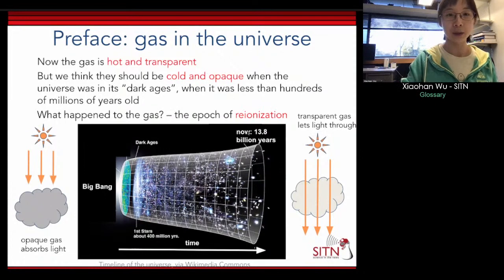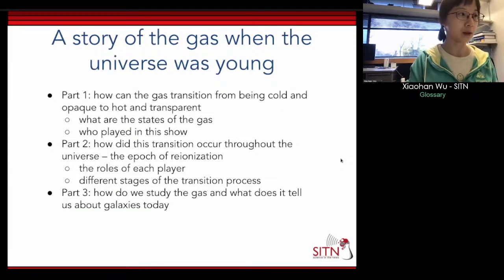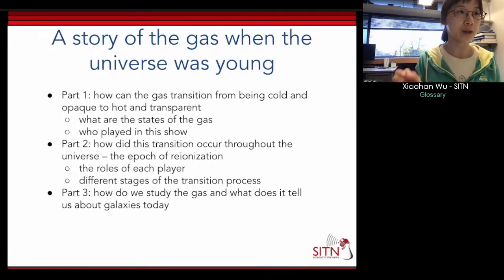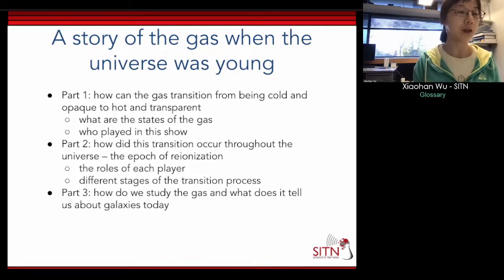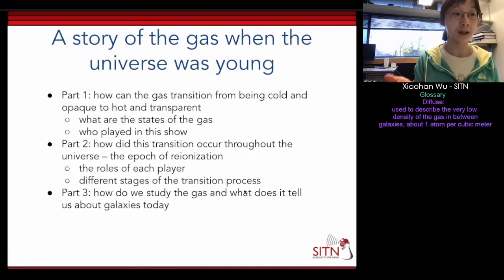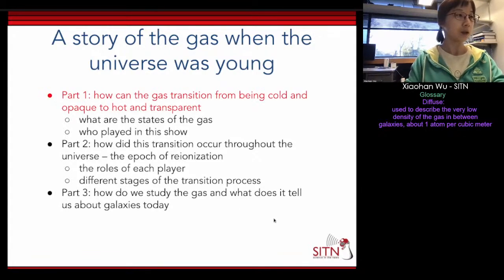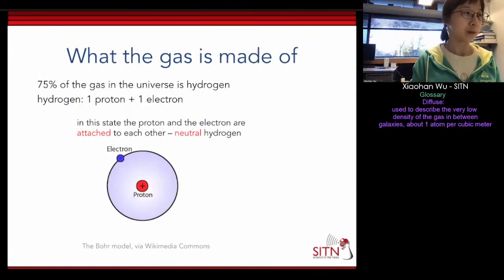Our whole talk is about this epoch of reionization, divided into three parts. The first part deals with how the gas transitions from opaque to hot and transparent. The second part discusses how this transition occurs throughout the universe. The third part returns to the ultra faint dwarfs question — the implications of studying reionization. But first, we need to understand what the gas is made of.